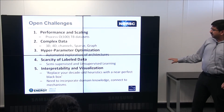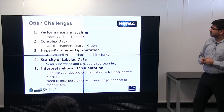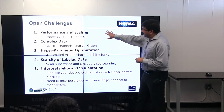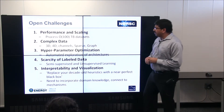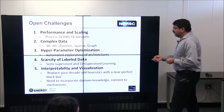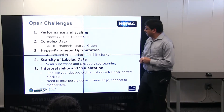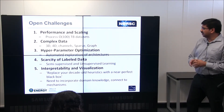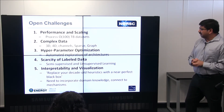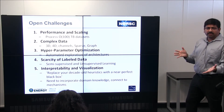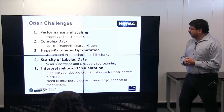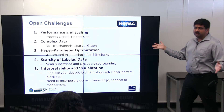Some open challenges remain. On performance and scaling, we've gotten to the 10-terabyte mark but have more data, so we need more scalable solutions. Scientific data is complex — it's not simple RGB images or 1D speech data. We typically have 3D, 4D, multichannel, hyperspectral data; sometimes the data is sparse, and sometimes there's a graph structure native to the dataset. We need to ensure convolutional architectures work across this full range of problem types.